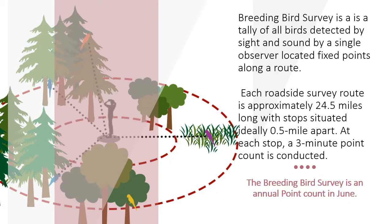The breeding bird survey is an annual survey done usually in May and June all across the U.S. and Canada. People go along a route that's almost 25 miles long, stopping every half mile to get 50 points, and at each point they do a three-minute point count — writing down all the birds they see or hear. That data is available online.